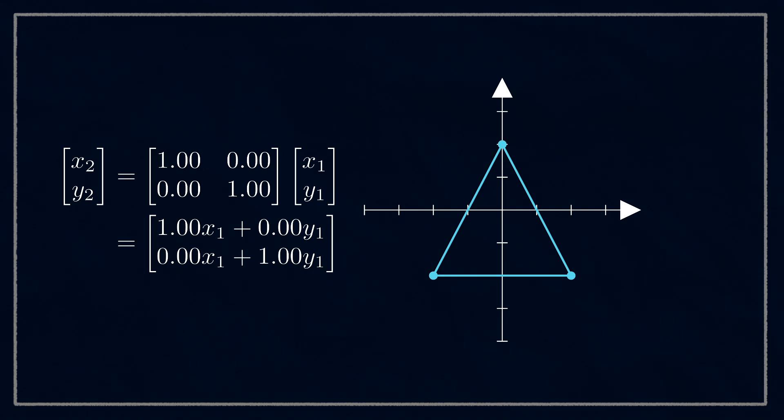If we leave the off diagonals as zero and start to change the first number, you'll see that this scales it in x, and then changing the bottom right corner scales it in y. That's because the top left element is how much x in affects x out, and the bottom right is how much y in is going to affect y out.